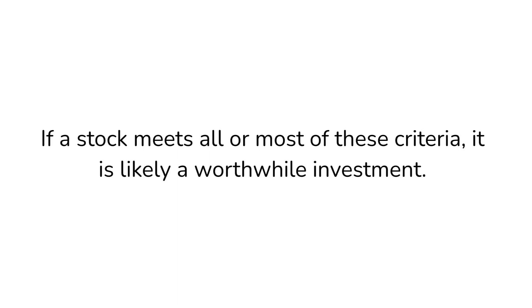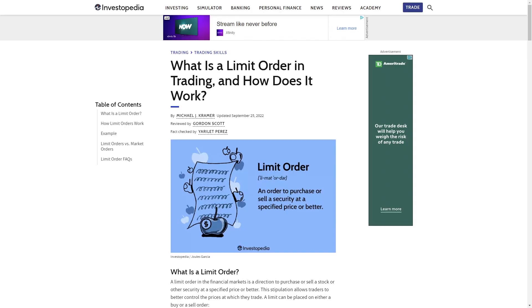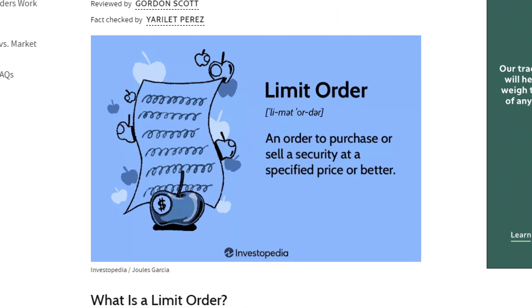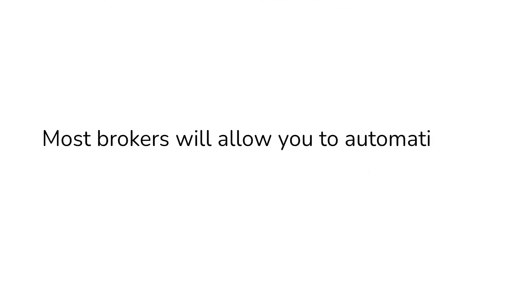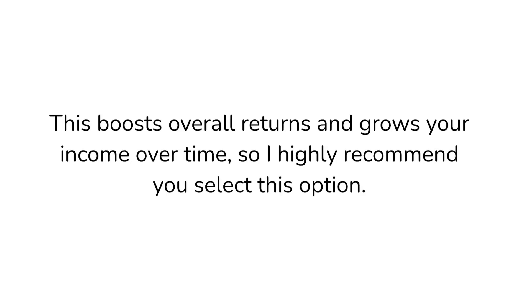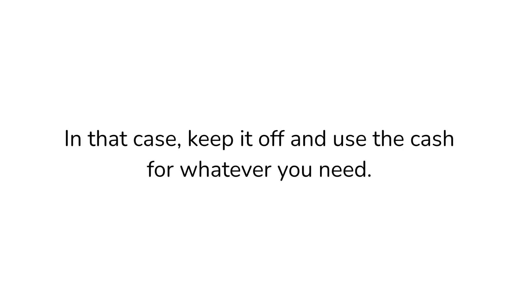If a stock meets all or most of these criteria, it's likely a worthwhile investment. Head over to your broker and place a limit order for the stock you want to buy. A limit order ensures you purchase the stock at a specific price, insulating you from any short-term price fluctuations that could happen with market orders. One thing you want to make sure of is that you turn DRIP investing on. Most brokers will allow you to automatically repurchase stock when dividends are paid. This boosts overall returns and grows your income over time. One exception would be if you are in retirement and need this income to pay for your living expenses — in that case, keep it off and use the cash for whatever you need.